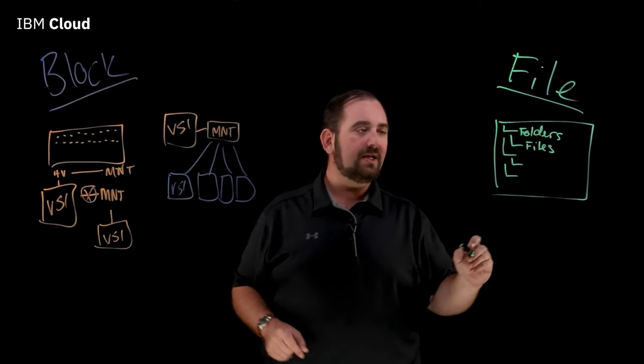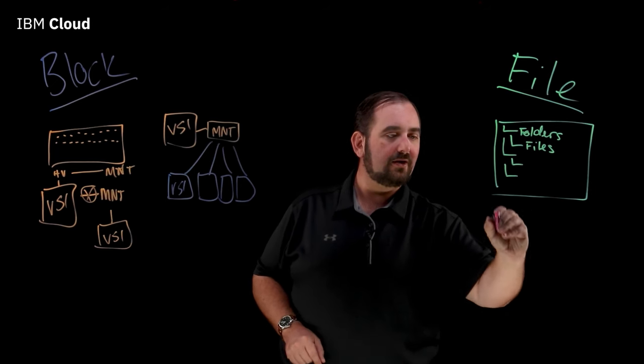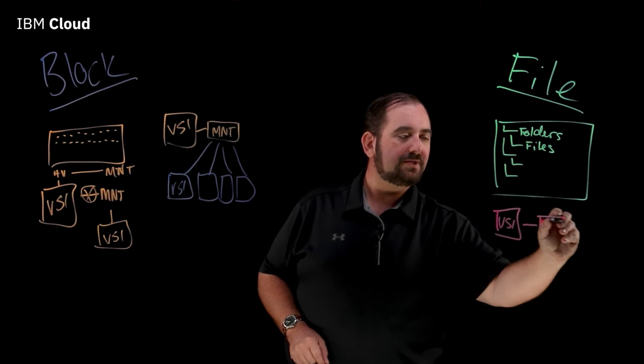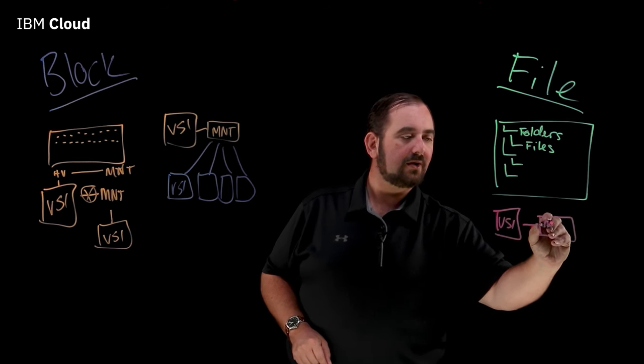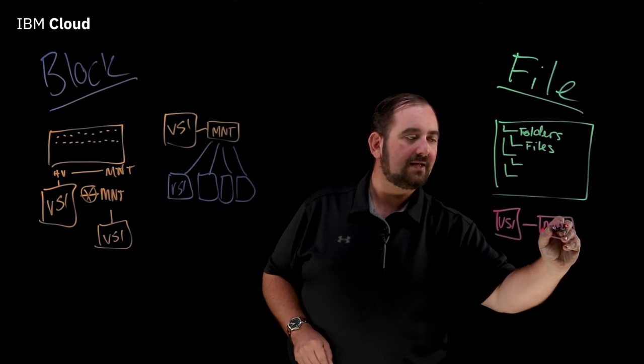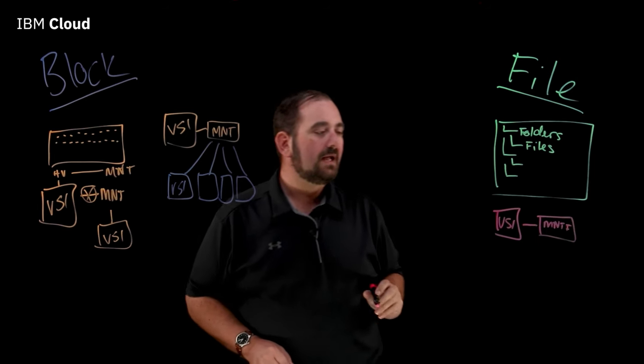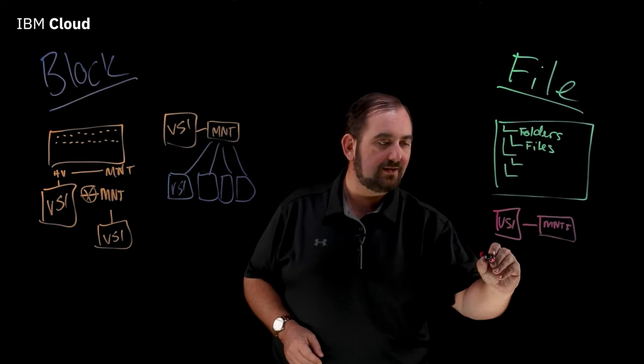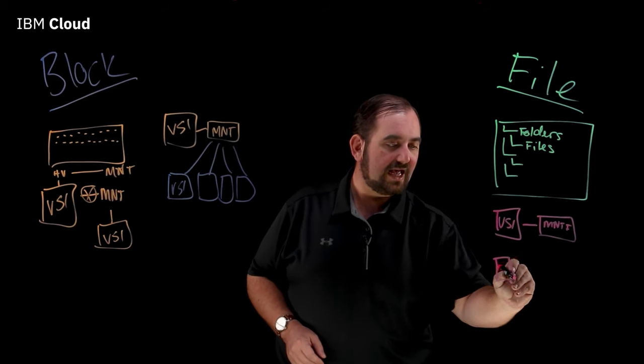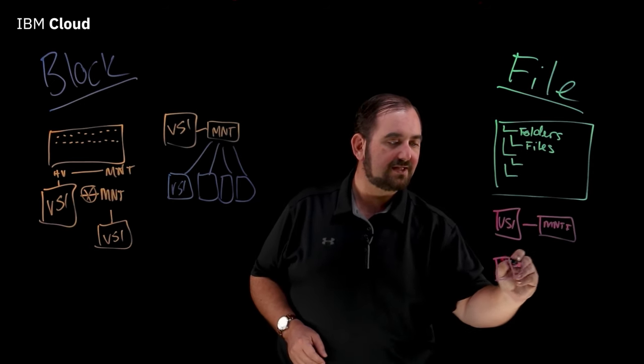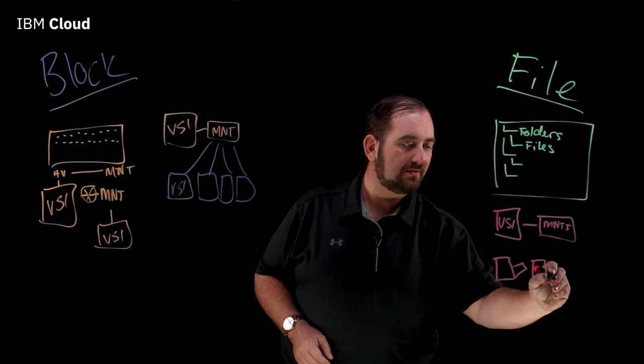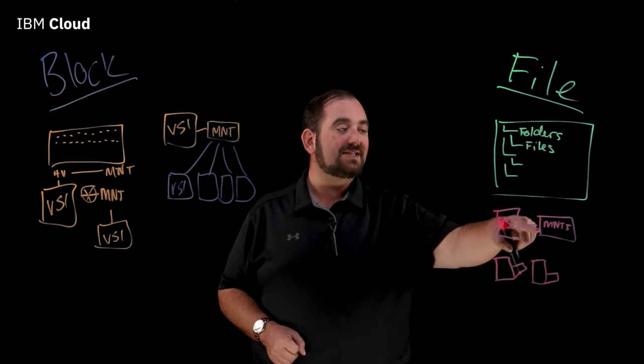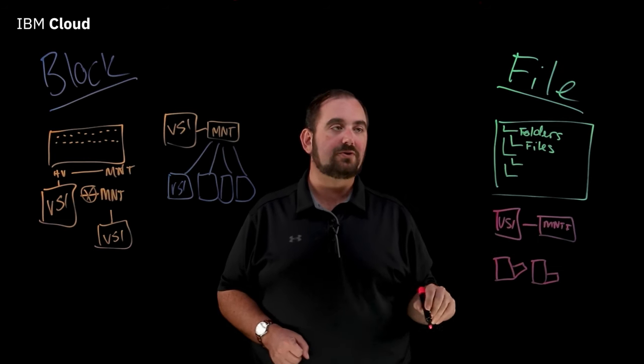So over here we have that example. So now let's get our VSI and we are going to mount a file share and we're going to call this one MNTF for file. Now let's imagine that I have a bunch of laptops, right, so my users have a network share in the office that they use. And so I've got, oh I don't know, two different laptops, and each of these laptops is accessing files that are stored on this central directory.